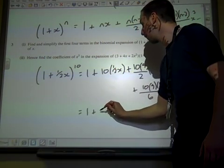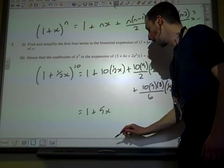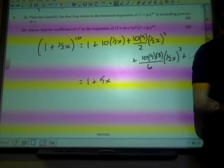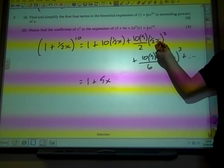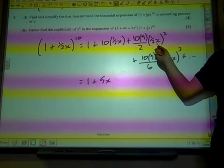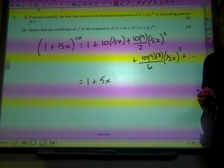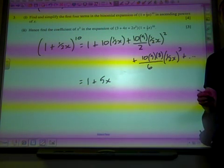So, as we work this through, that's one, that's five x. Now, just really careful with this. Here we've got a half x when we square it, which isn't a half x squared, that's going to be a quarter x squared.